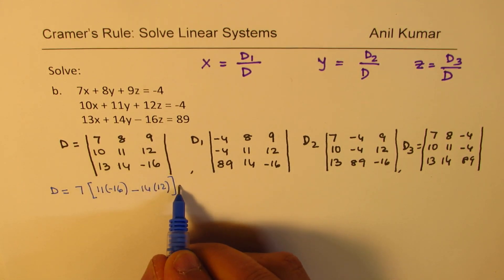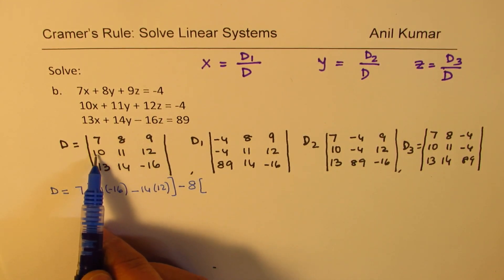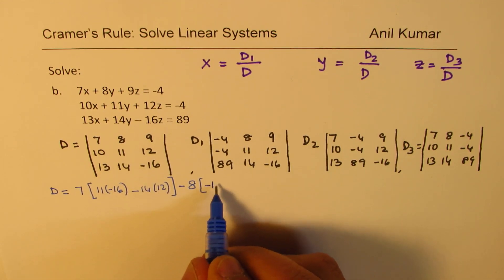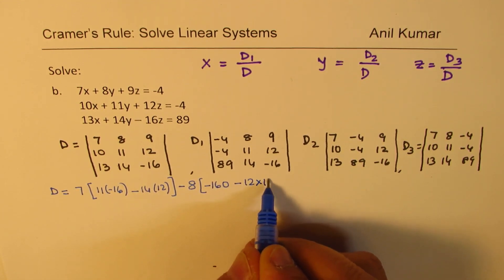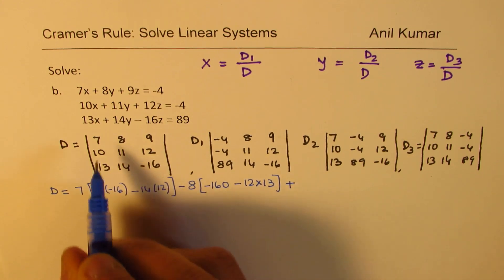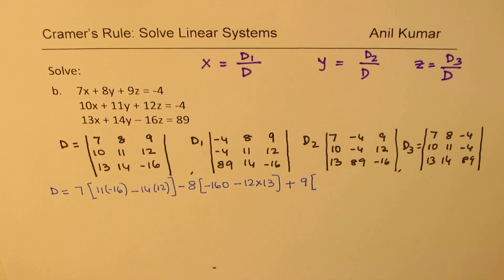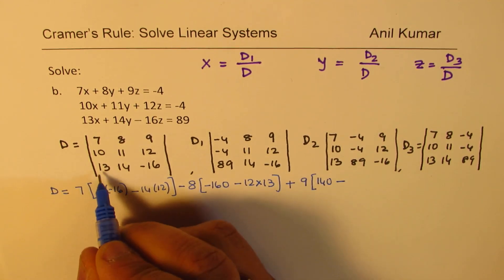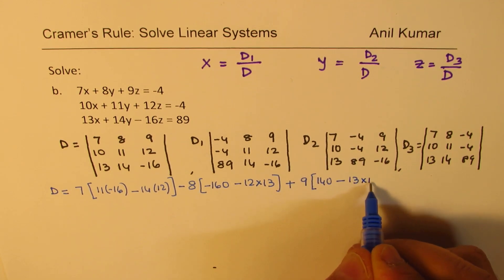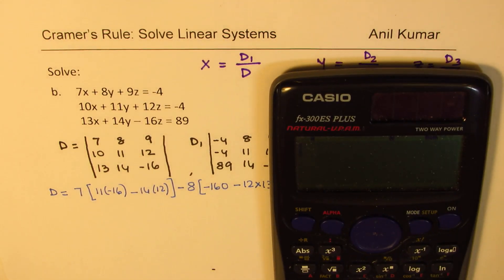And then, with second, we have to use the negative sign. So, I get -8. And now, we'll isolate those two rows and columns and then multiply 10 with -16. Let me write -16. And then, 12 times 13 will take away. So, 12 times 13. Is that clear to you? And then, we'll do plus. So, alternately, we'll use plus, minus and plus. That is a standard way of working with determinants and finding the value. So, with 9, it will be 10 times 14, which is 140, minus 13 times 11. Now, we'll just figure out this value using calculator. Let's calculate the values.